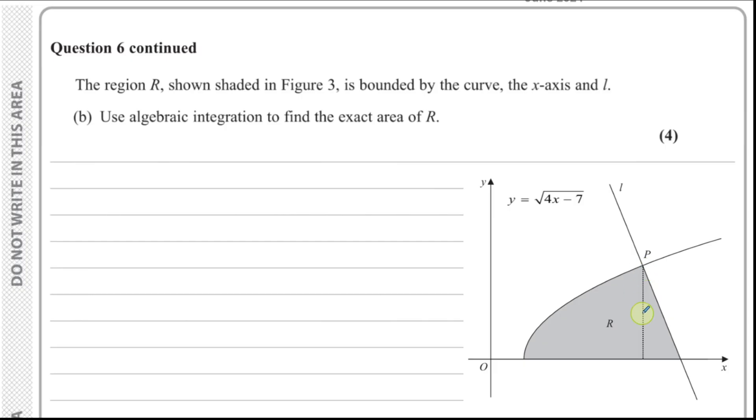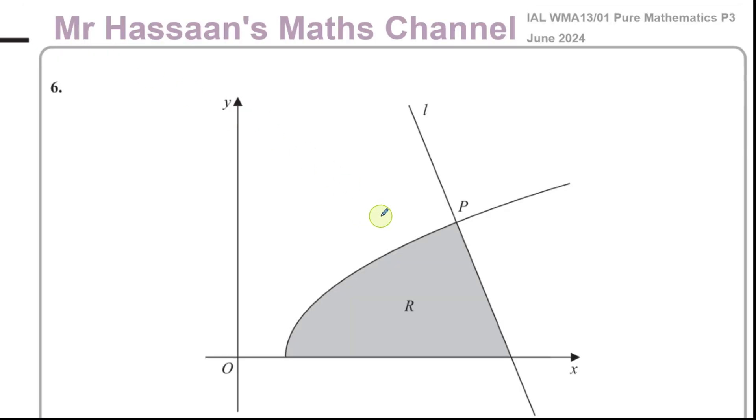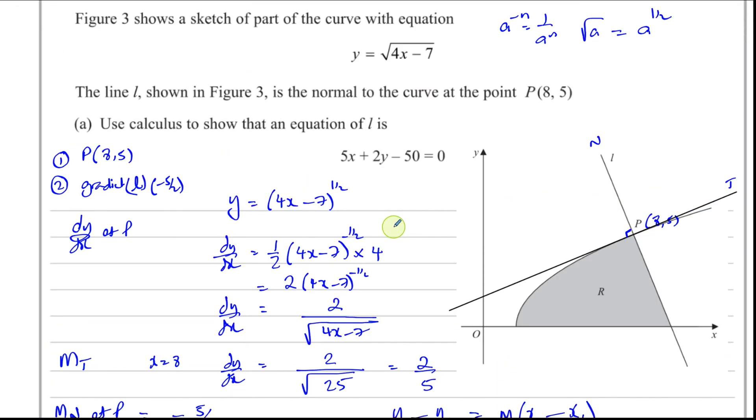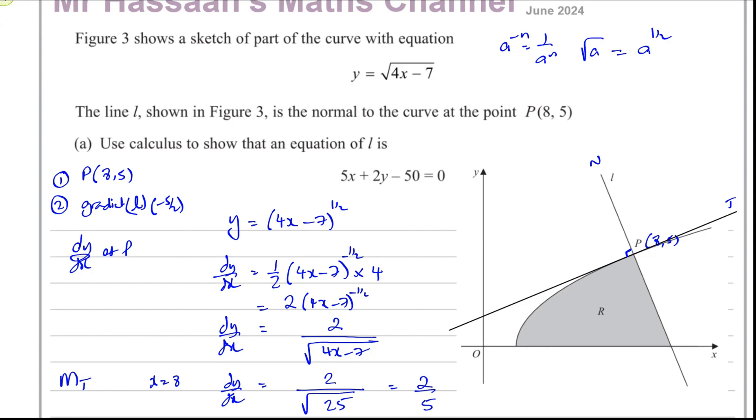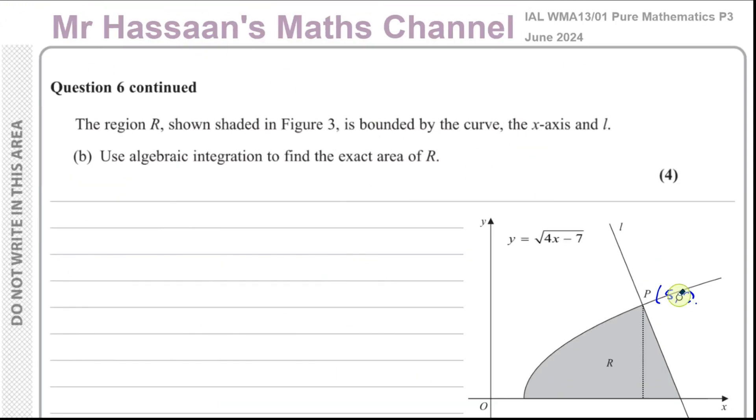So this is the point 5, 8. Is it 5, 8 or 8, 5? Let's just make sure. In fact, it's 8, 5. That would have messed me up if I continued. It's always good to make sure. So this is the point P, which is 8, 5.